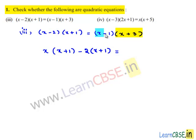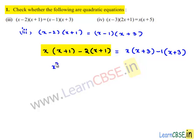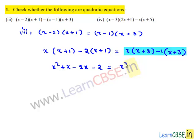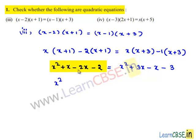On the right hand side we have (x minus 1)(x plus 3). Expanding the left hand side: x times x is x squared, plus x, minus 2x, minus 2. Expanding the right hand side: x squared plus 3x minus x, which becomes x squared plus 2x, minus 3. So on the left hand side we have x squared minus x minus 2, and on the right hand side x squared plus 2x minus 3.